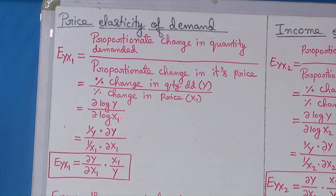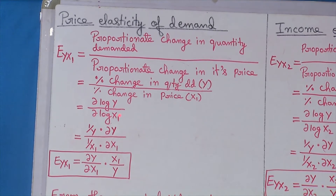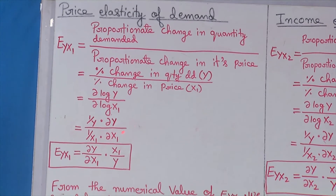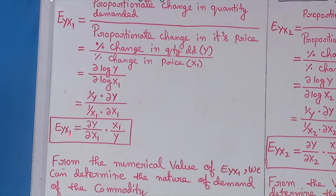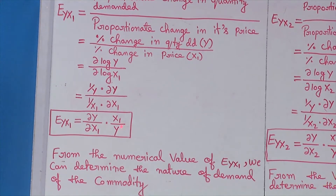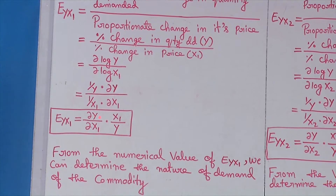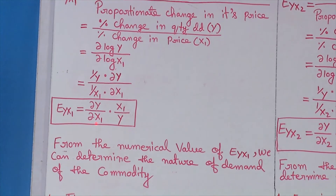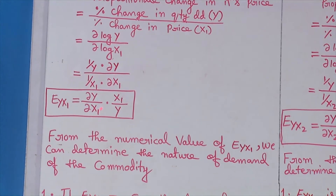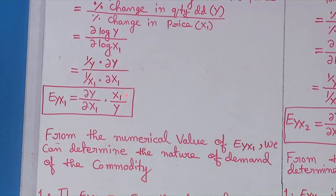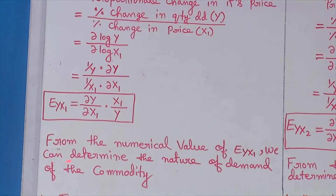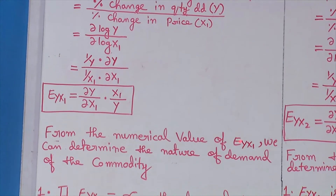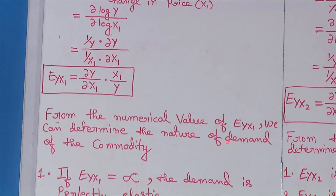So, ∂log y = (1/y)·∂y and ∂log x1 = (1/x1)·∂x1. Taking the values, the price elasticity of demand E_YX1 = (∂y/∂x1)·(x1/y). Here, ∂y/∂x1 is the marginal value of y with respect to x1 assuming x2 as constant, x1 is the mean value of price, and y is the mean value of quantity demanded. From the numerical value of E_YX1 we can determine the nature of demand of the commodity.